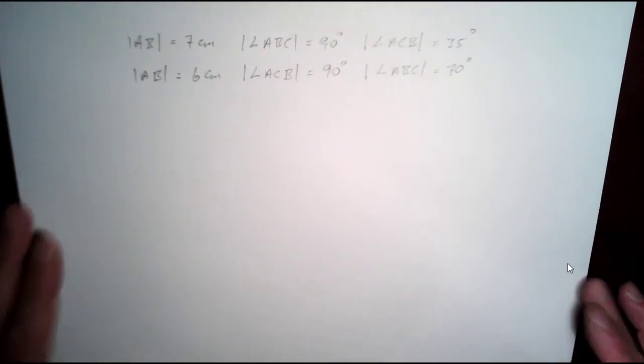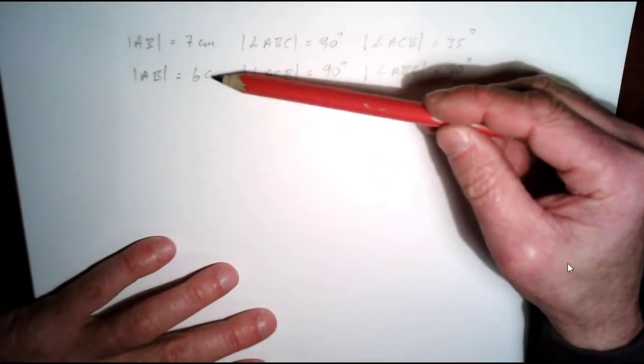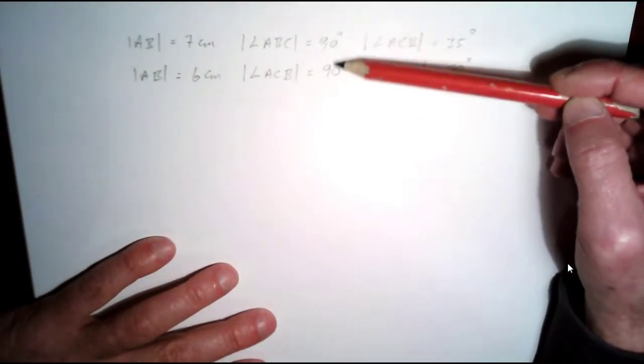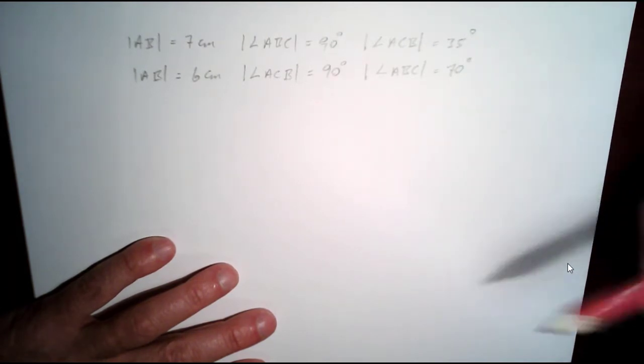Okay, so let's have a look at drawing two more right angle triangles. In both cases we're given a side, we're given where the 90 degrees is, and another angle as well, 35 and 70 degrees here.